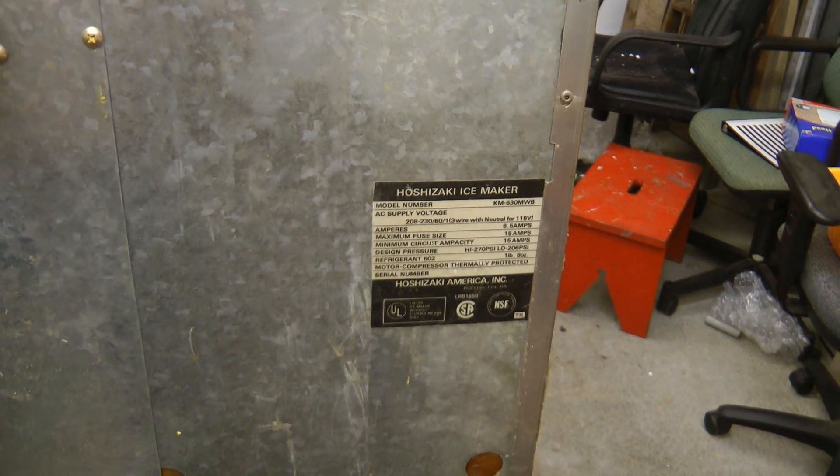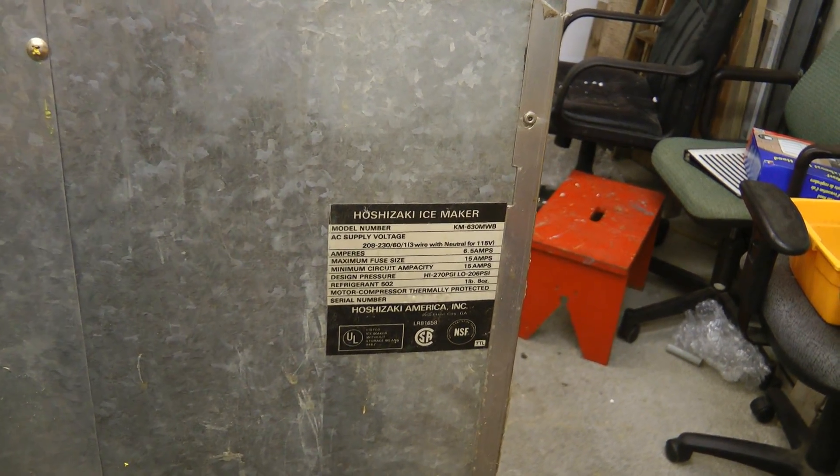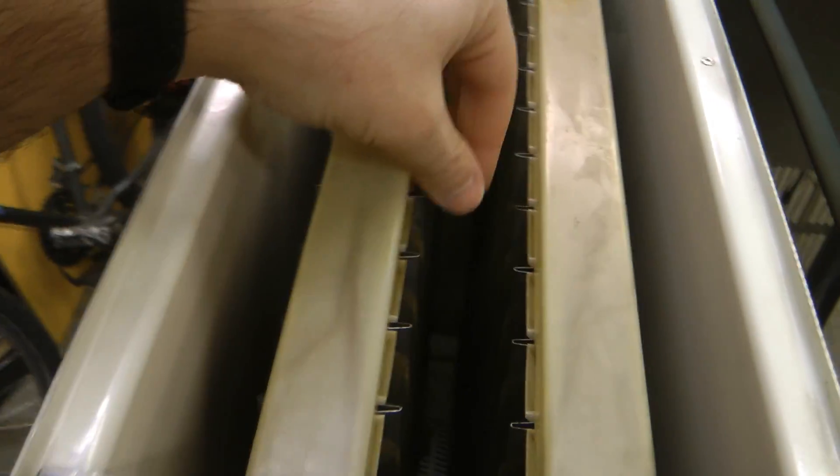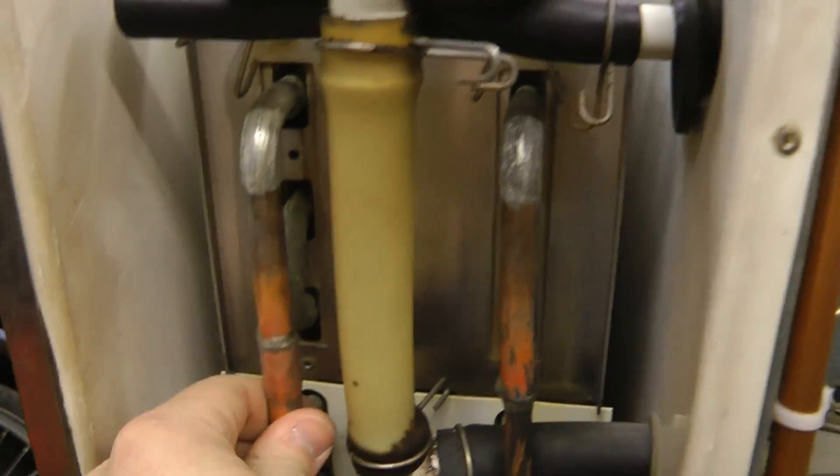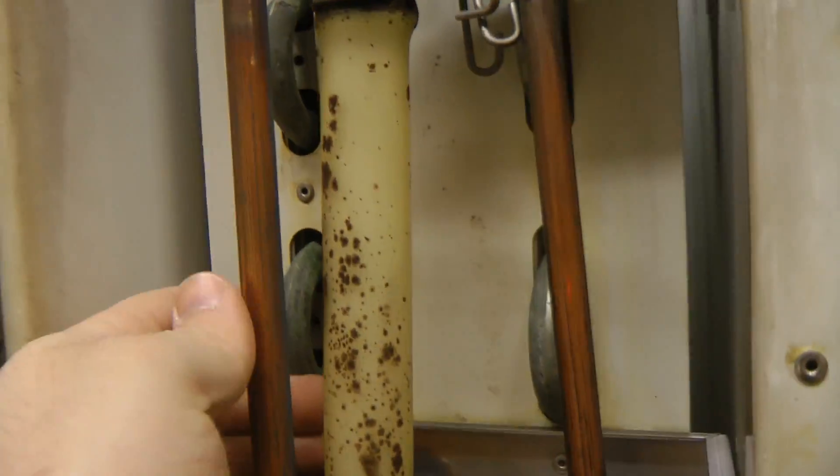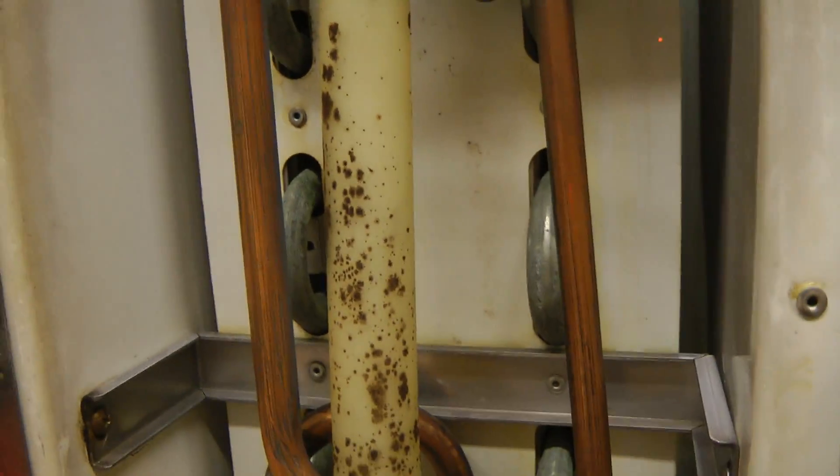I've linked the user manual and service manual in the video description if anyone wants to look at those. The actual ice maker portion consists of these, I believe they're stainless steel, ribbed pieces. These have the refrigeration coils running in between them. They're not really anchored well, they move around quite a bit, so thermal coupling is not really that good.